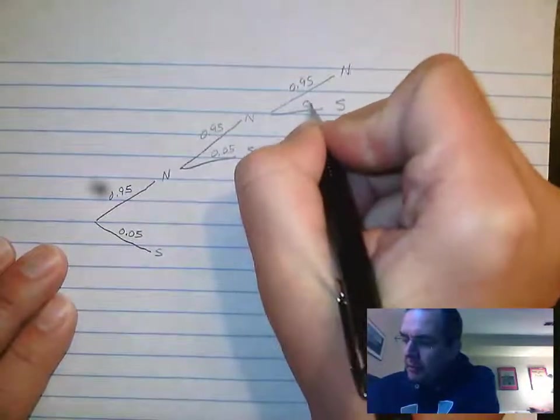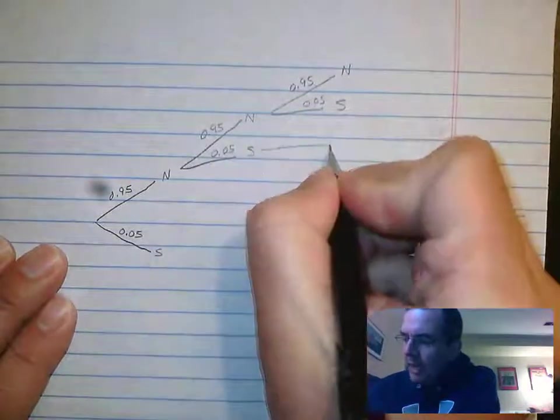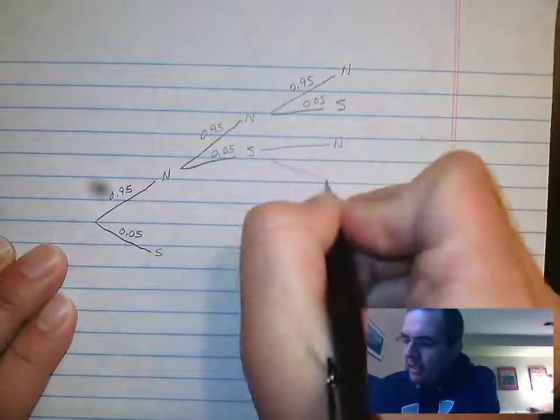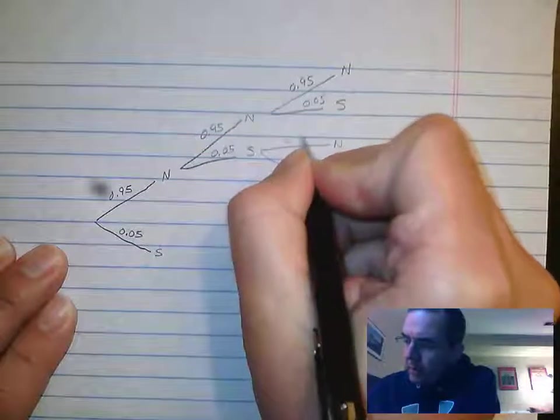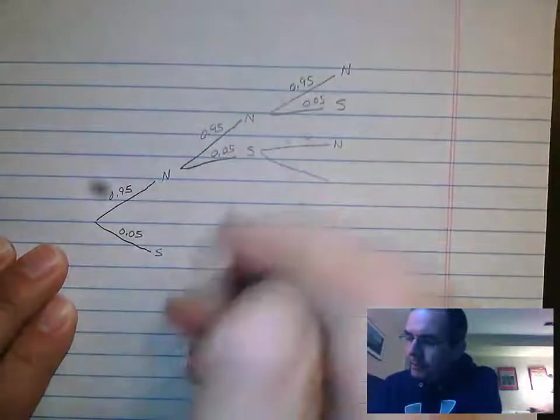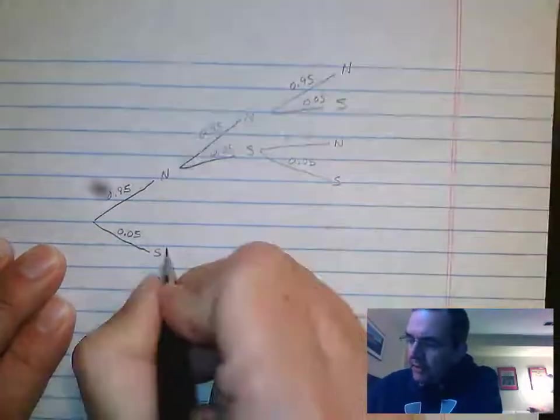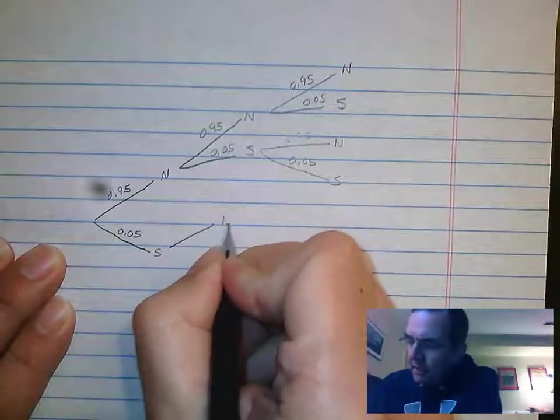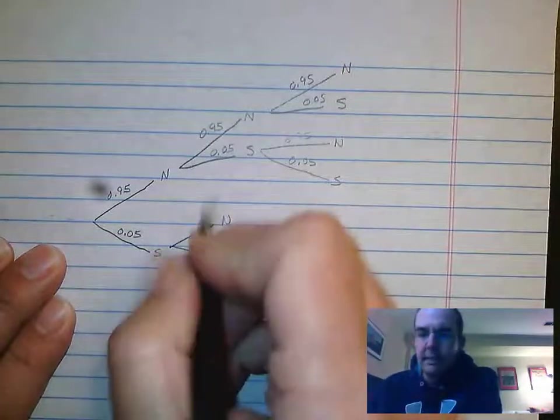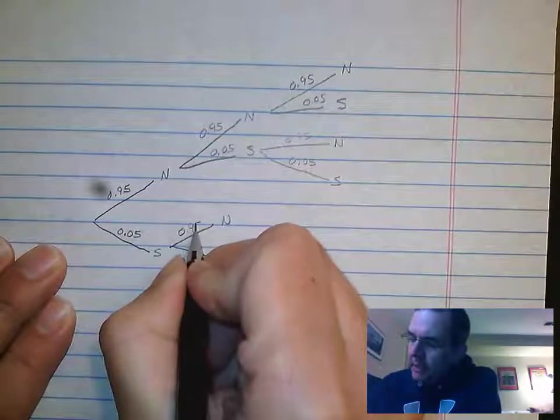What ends up happening here is we end up with a pretty big tree diagram. So we finished off significant, now we need to mirror this: not significant, significant, 0.95...